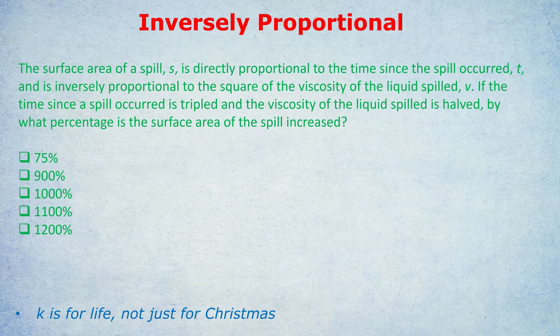As ever, try it yourself, or you can wait to see my explanation. The question is this: the surface area of a spill, S, is directly proportional to the time since the spill occurred, T, and is inversely proportional to the square—oh, that's different—of the viscosity of the liquid spilled, V. Don't be intimidated though, it's very similar. If the time since the spill occurred is tripled and the viscosity of the liquid spilled is halved, by what percentage is the surface area of the spill increased? Sounds crazy, right? It really isn't that bad.